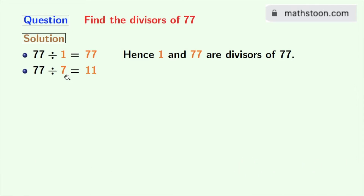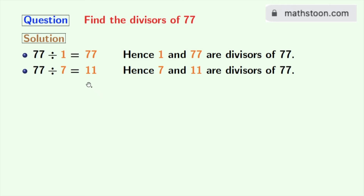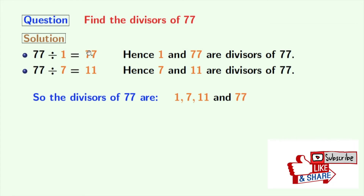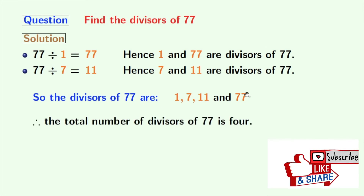Hence we get 7 and 11 as the divisors of 77. Now there is no number which can divide 77, so we will stop right now. We have all the divisors of 77 here, shown in orange. These numbers are 1, 7, 11, and 77. So the total number of divisors of 77 is 4.